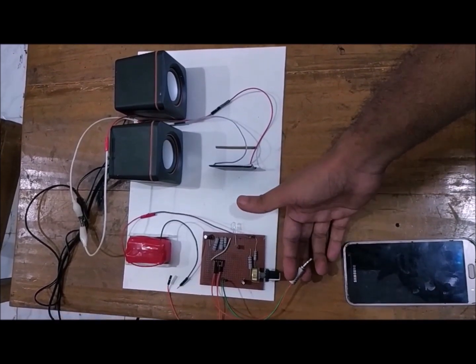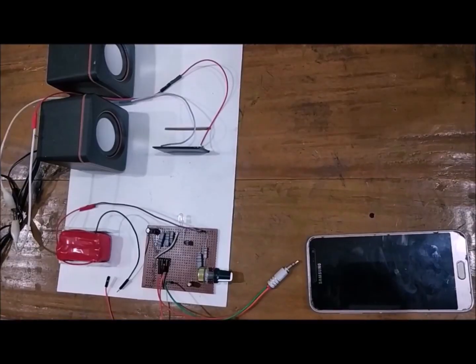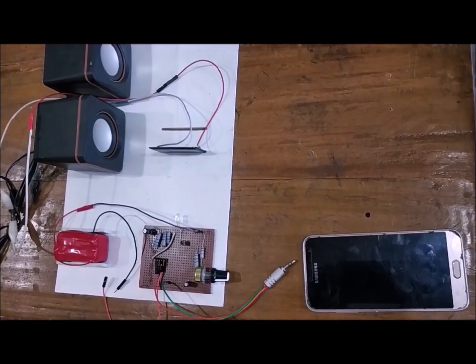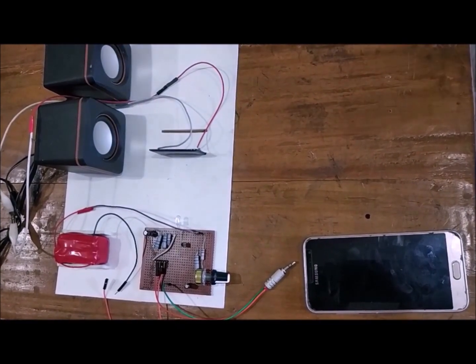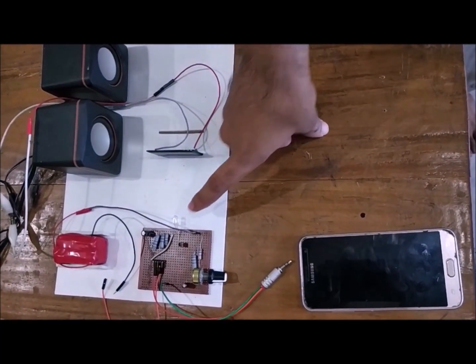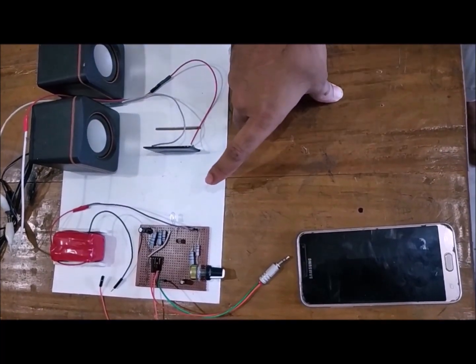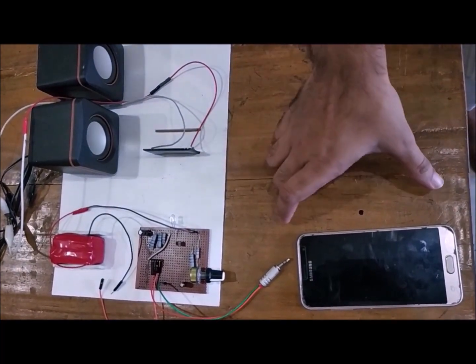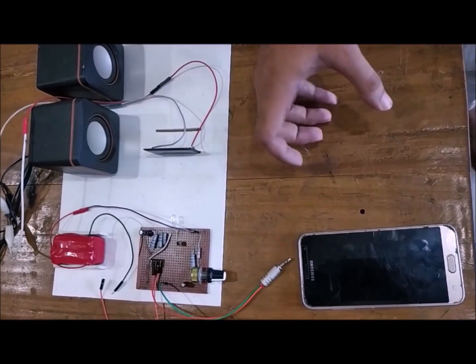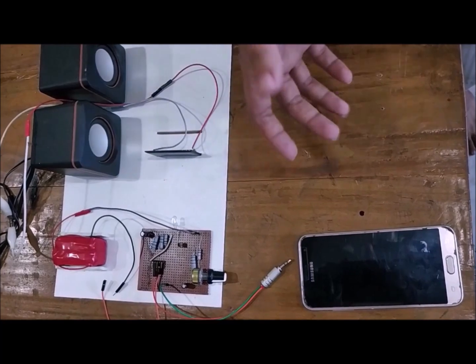We have an input jack, a 3.5mm jack where we give the input sound. In this technology, data is transmitted using an LED bulb and received by a solar panel. Here you can see there is an LED bulb and there is a solar panel. To transmit data we will connect a mobile phone using this jack. The data is an audio signal.